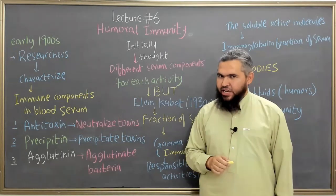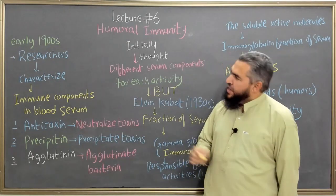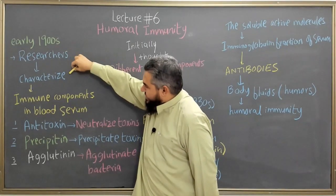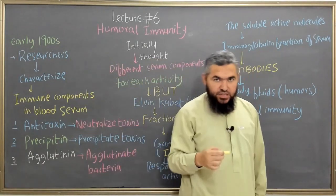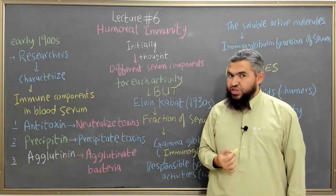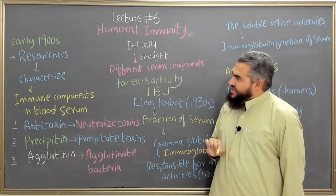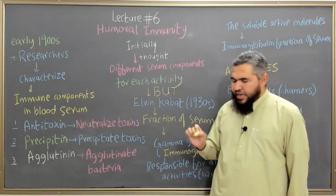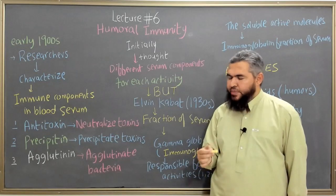In order to find out the active component of immunity, different researchers in the early 1900s had to characterize the different immune components present in the blood serum. These components were able to provide immunity against different sorts of pathological organisms and their products. What these researchers characterized was that there are different components present in the blood serum, each performing different immunological functions.